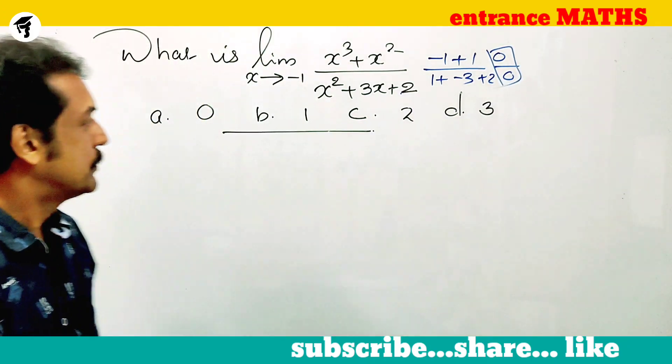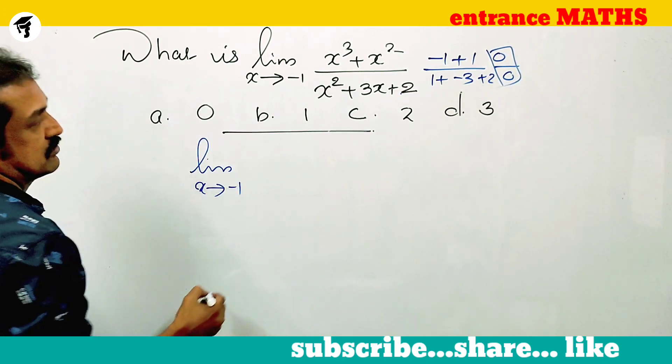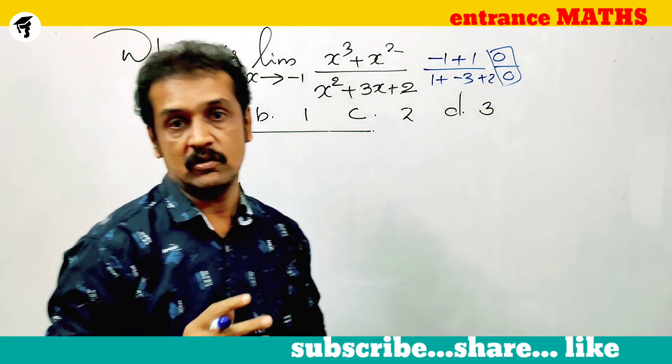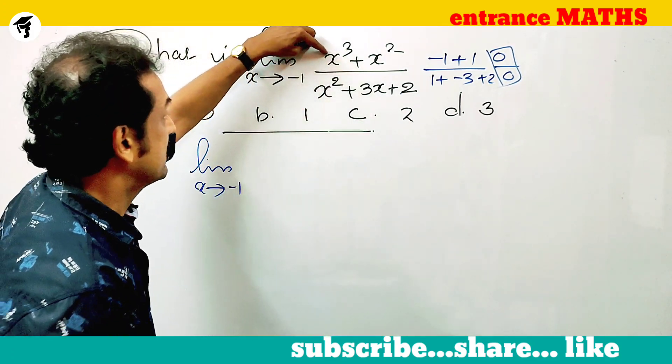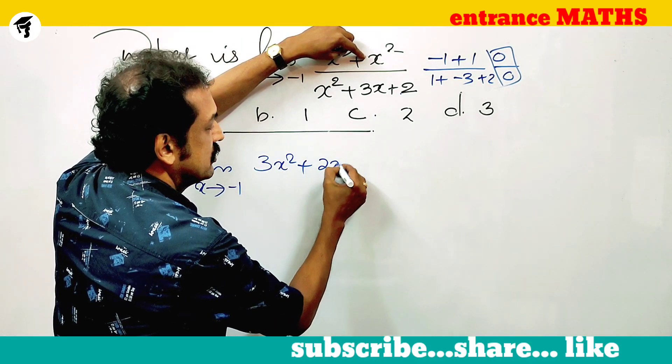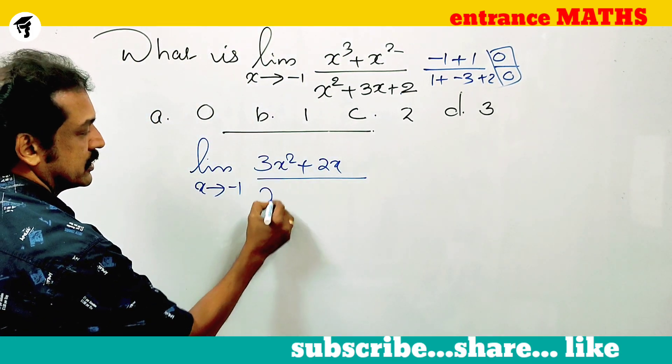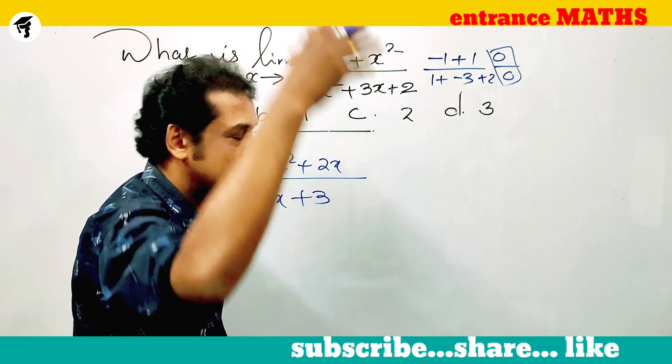Limit x tends to minus 1. Taking the derivatives on numerator and denominator separately. What is the derivative of x cube? 3x square. x square is 2x. By, x square is 2x, 3x is 3, plus 2 the derivative is 0.